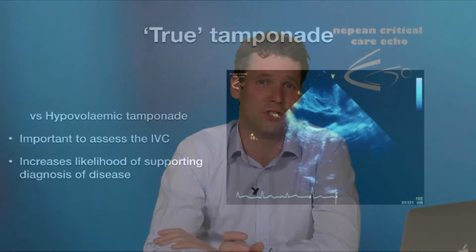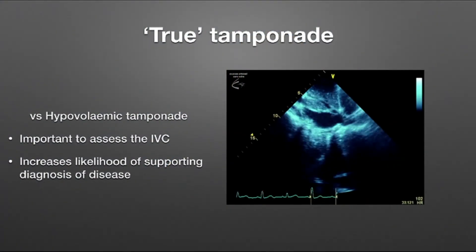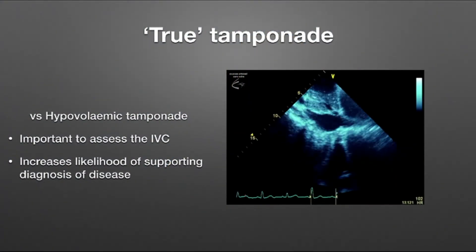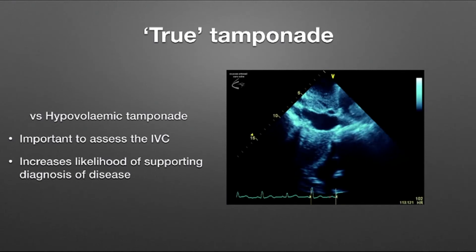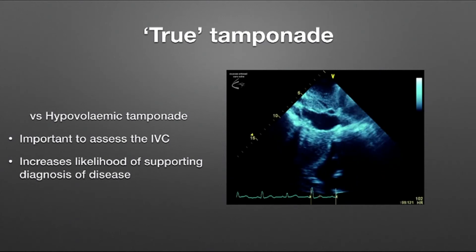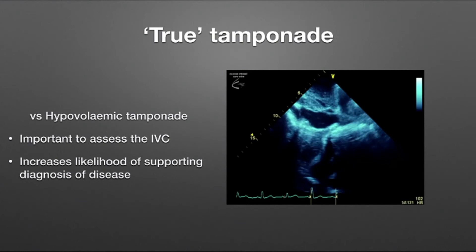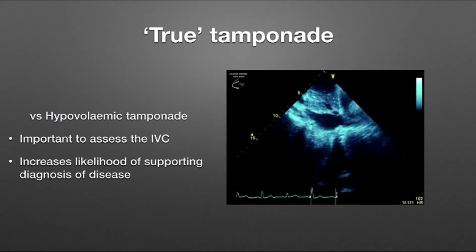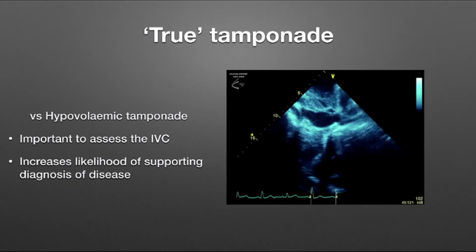The IVC diameter assessment is important because it can help differentiate true tamponade from hypovolemic tamponade. In true tamponade, we see a dilated IVC greater than 21 millimeters with minimal inspiratory collapse. This tells us there is impairment to right atrial filling, and that increases the likelihood of the supporting diagnosis of tamponade.